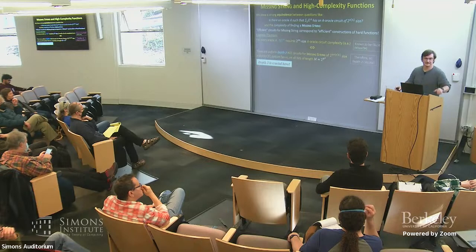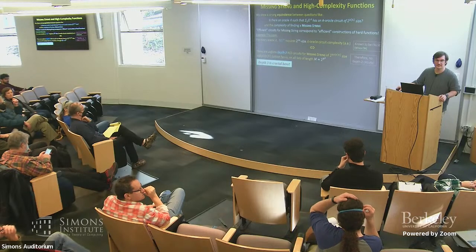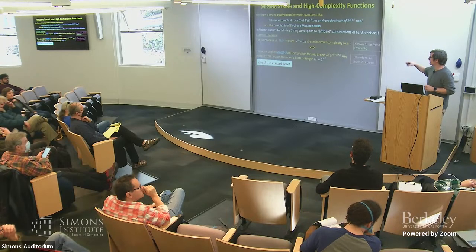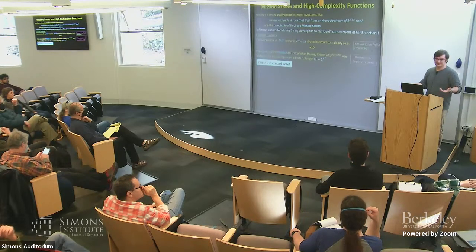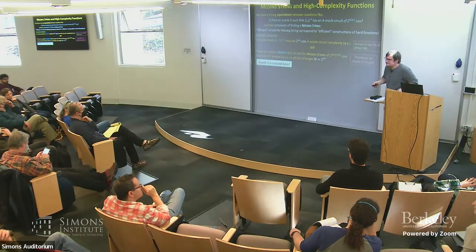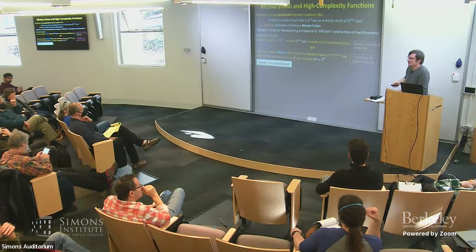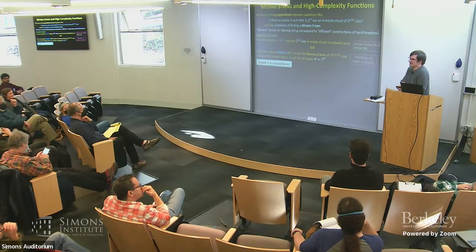Another note: if you believe in circuit lower bounds — that NP requires exponential-size circuits — then there actually are depth-2 circuits for succinct instances of missing string, where 'succinct' means there's a small circuit that generates the instance. So this is a weird situation: we know a lower bound for arbitrary (random) instances, but for succinct instances we believe there's actually a better algorithm. Normally we think of P≠NP and circuit lower bounds as roughly the same, but this shows some weirdness.